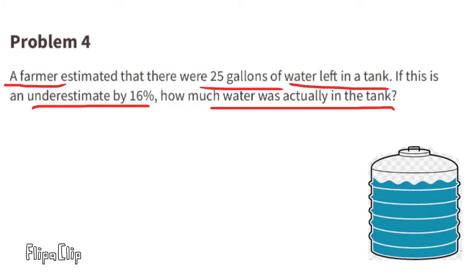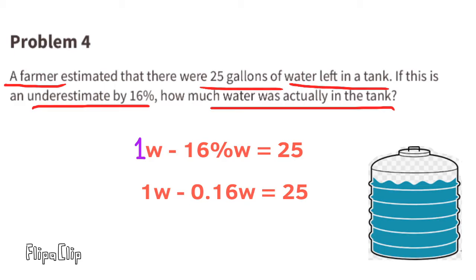If this is an underestimate by 16 percent, how much water was actually in the tank? The unknown amount of water w minus 16 percent of that water equals 25 gallons, the farmer's estimate. Think of w as 1w, and 1w minus 0.16w gives us the equation 1w minus 0.16w equals 25.